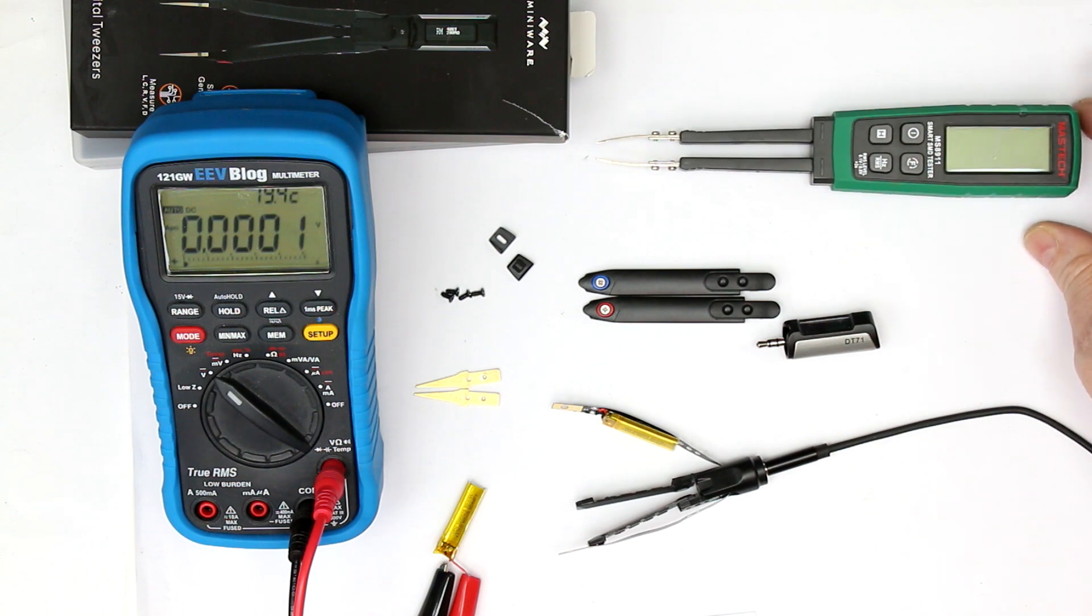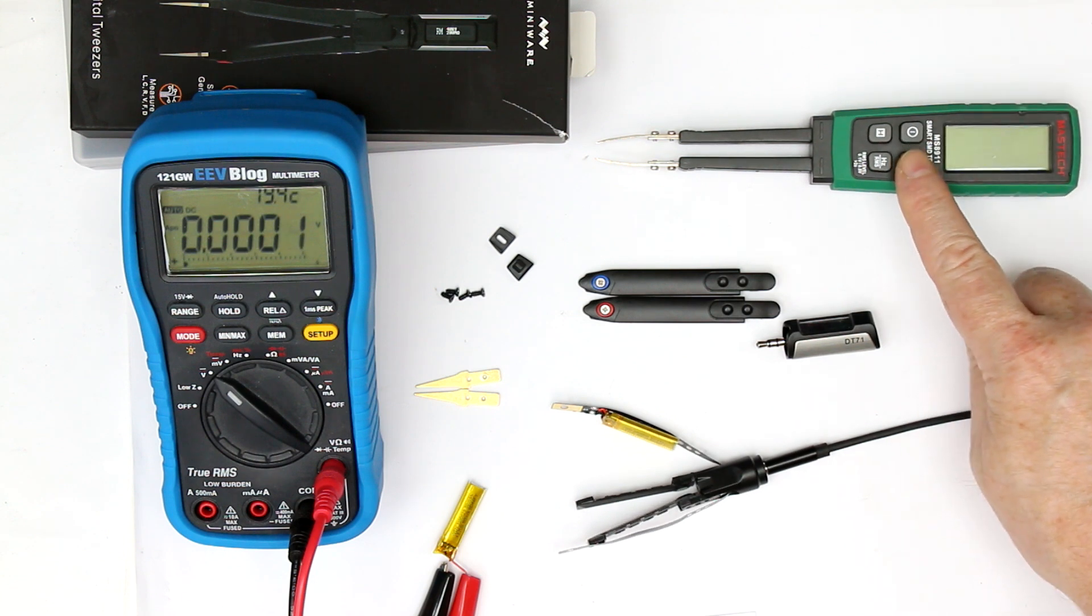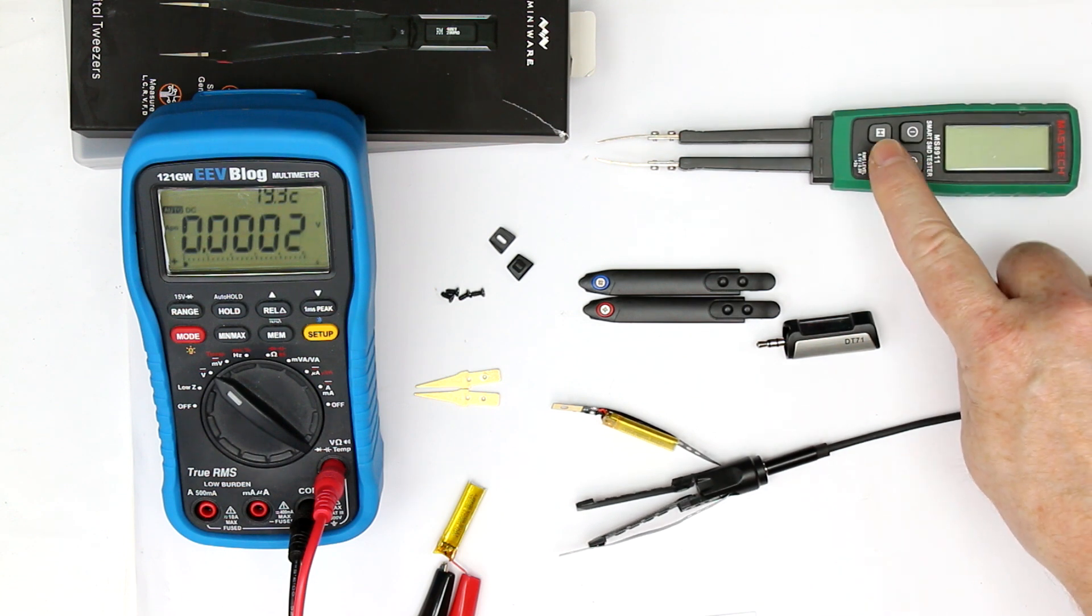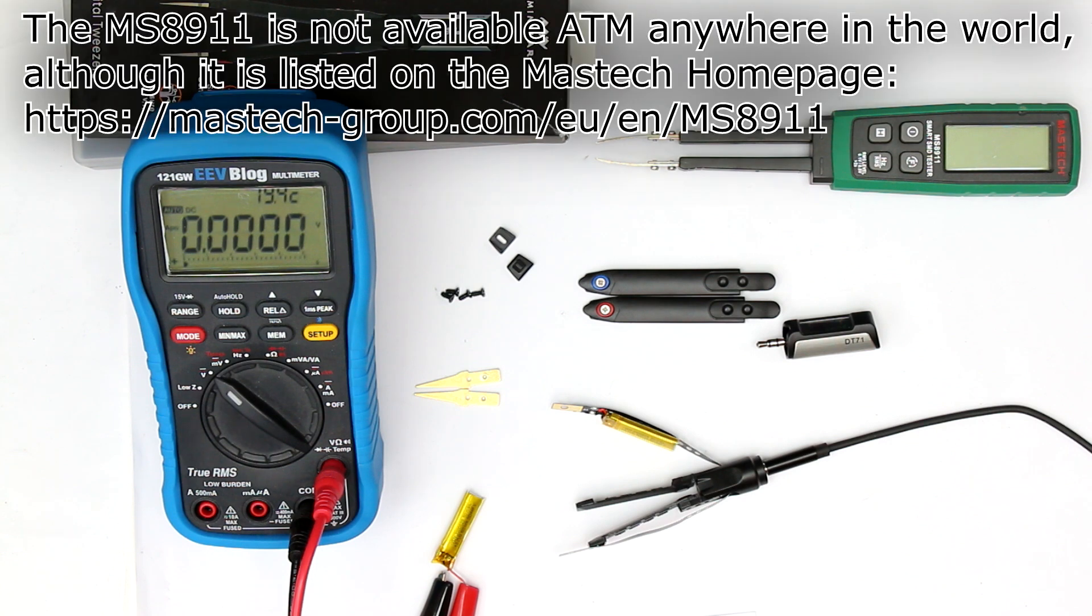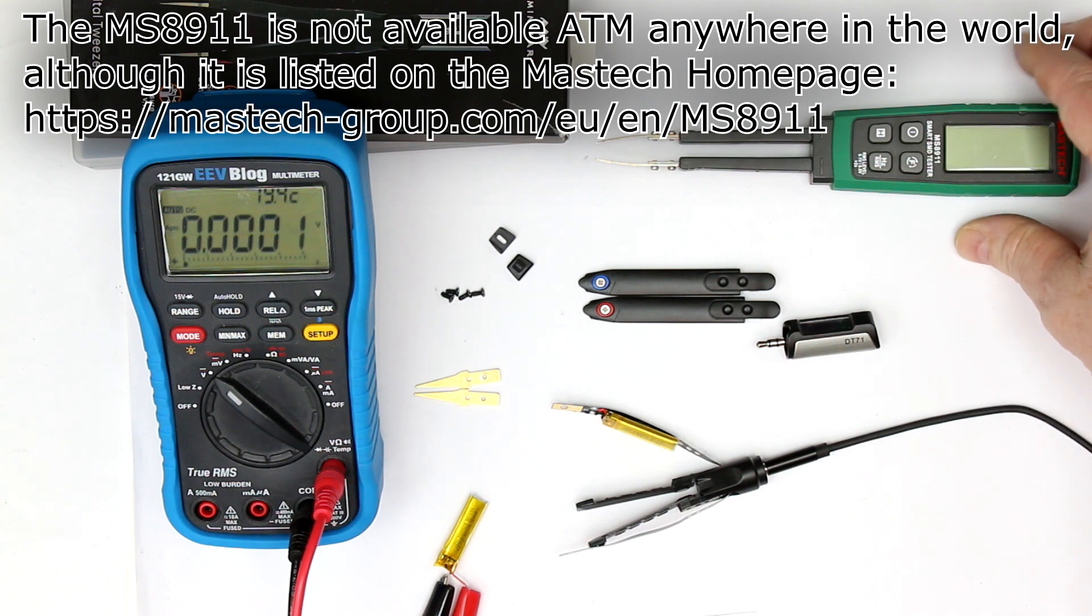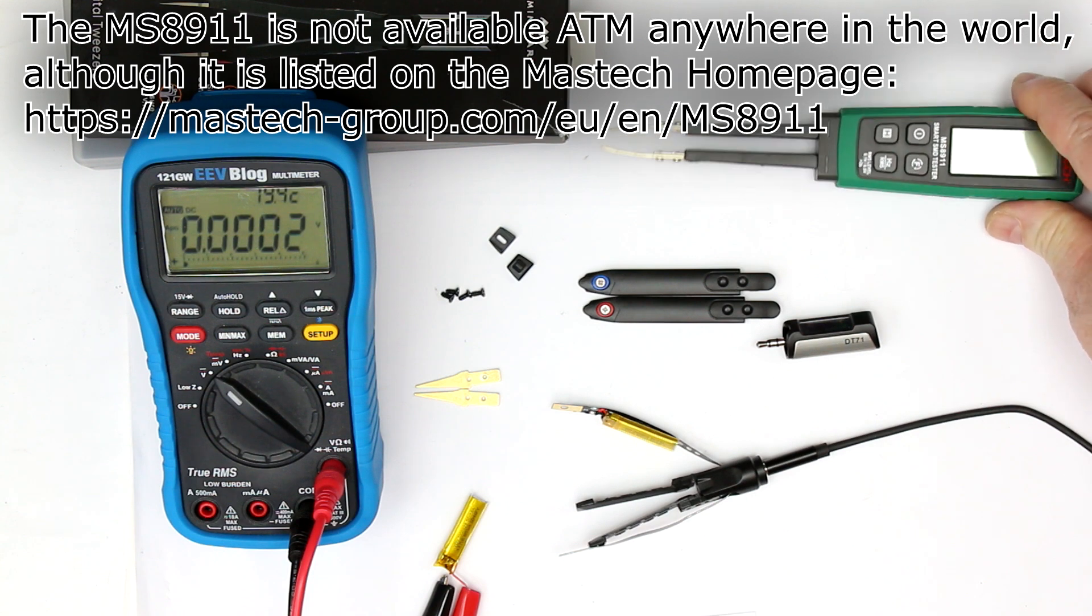This one has the unique feature that you have a low voltage measurement mode with only 100 millivolts AC measurement voltage and thus you can measure components in circuit because any PN junction is not turned on and this is I think a must have for an RLC meter in this form factor.